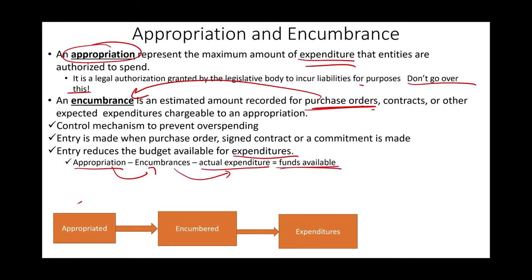Chester County incorporates its budget in its accounting system and encumbers all purchase orders. Prior to the start of the year, the governing body estimated revenue to be $5,600 and appropriated expenditure of $5,550. The journal entry: debit Estimated Revenue $5,600, credit Appropriation $5,550, and credit Budgetary Fund Balance $50. These are budgetary accounts that will be closed at the end of the year.